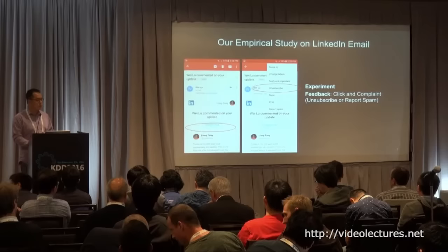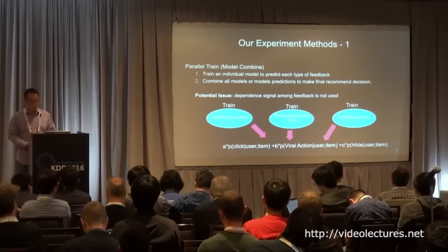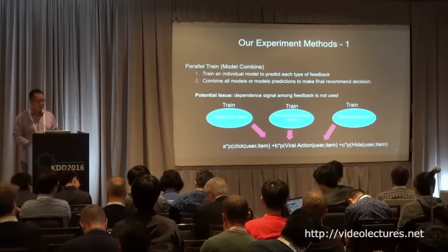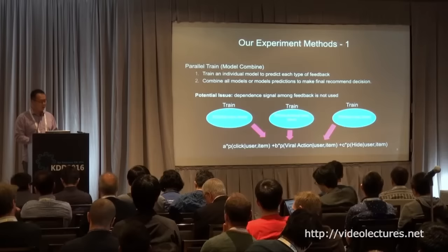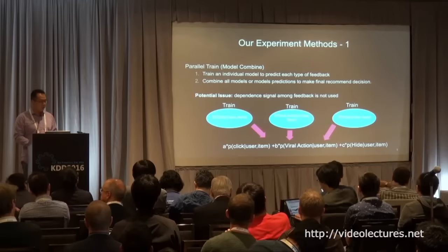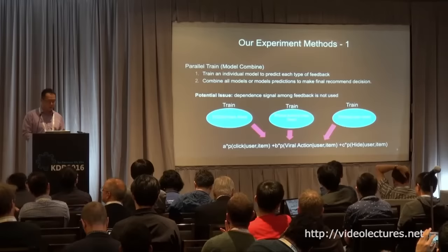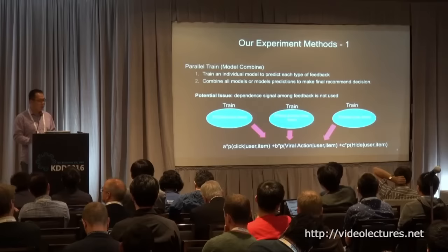We tried three different methods, and they are all quite simple. The first is to train models individually. For example, we have click feedback, viral action feedback, and hide feedback. We train a model individually to predict how likely the user will click, like/comment/share, or hide an item. We then get three probabilities and do a linear combination to get a combined score, and rank all feed updates based on that combined score.